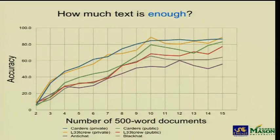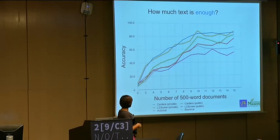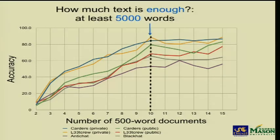How much text is enough? When modeling a classifier to identify a member, we need to train it with enough text. This graph shows on the x-axis the number of 500-word training documents used, and the y-axis shows classifier accuracy, with each line representing one forum. As we add more documents, accuracy increases, and we found that after 5,000 words the accuracy did not improve much. So 5,000 words is the minimum needed to correctly identify a person. We used 6,500 words because that is the gold standard for writing style analysis.